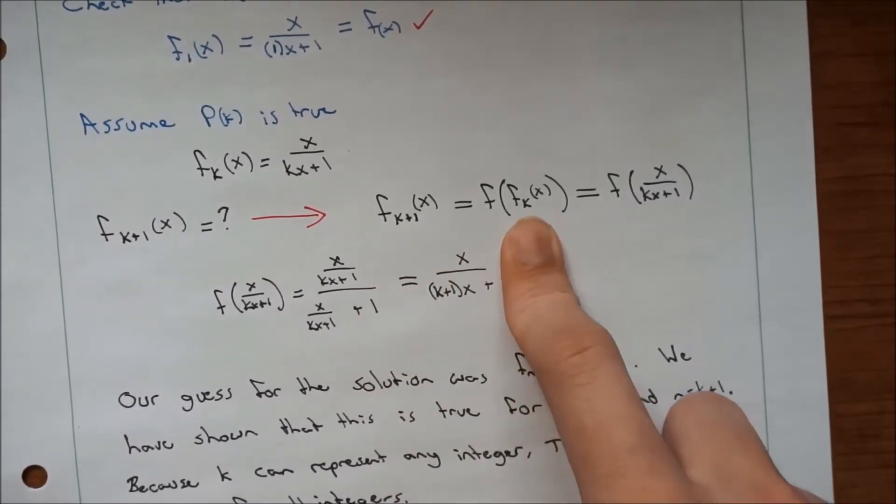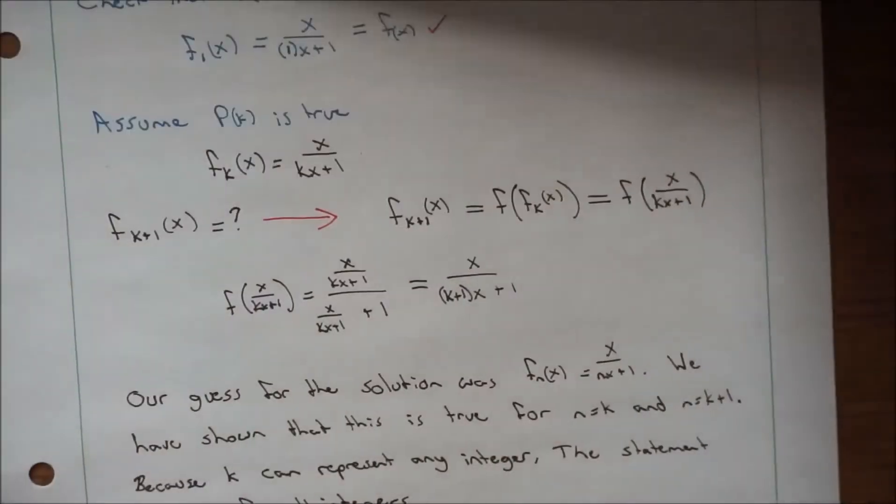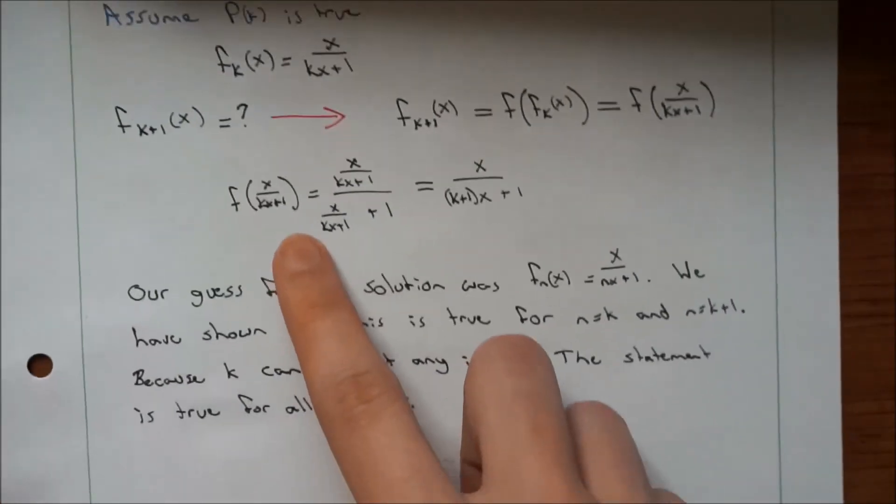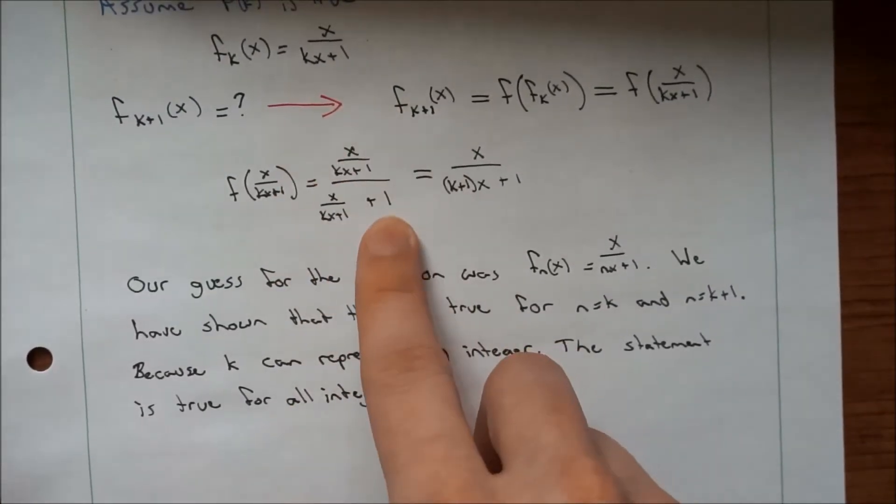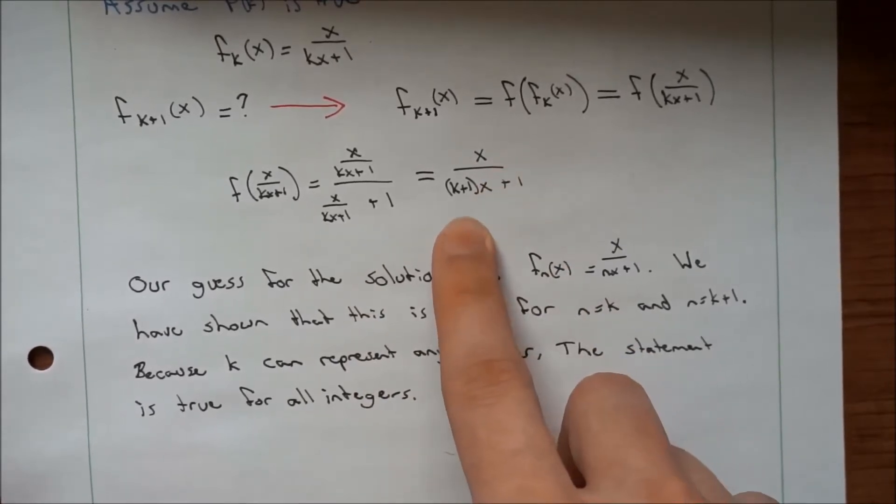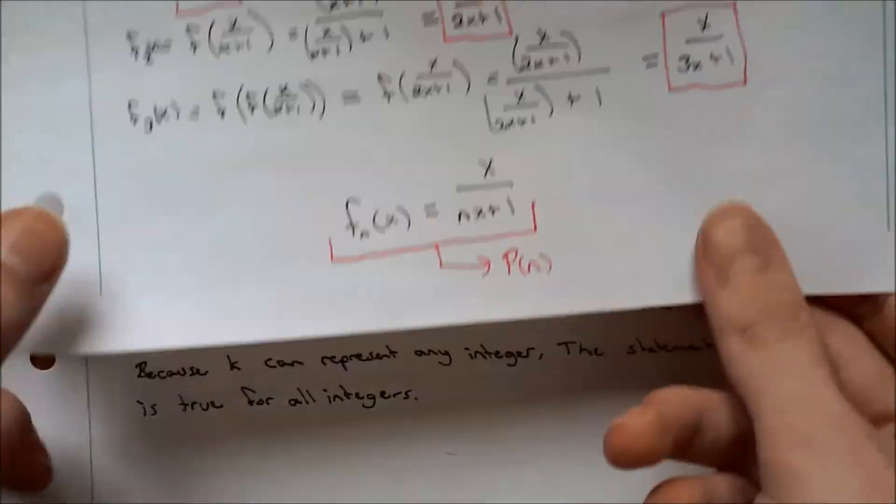So you're just going to take that original formula, this thing, and put in f_k(x). So you do that, it looks like this, and if you simplify that out, you can reduce it to x/((k+1)x+1),